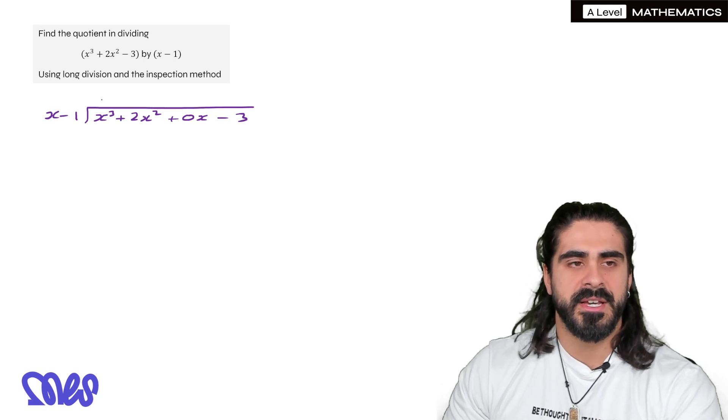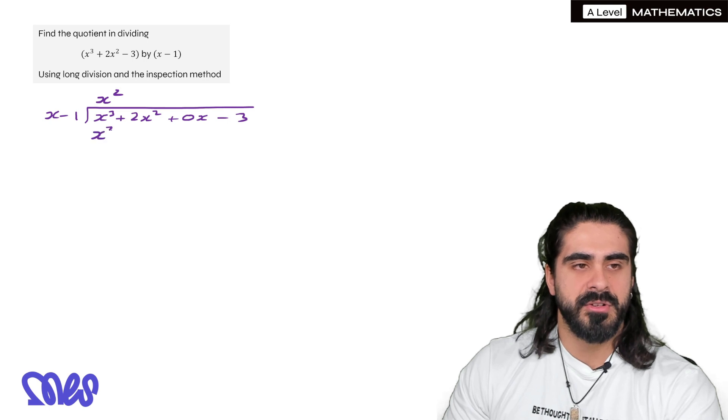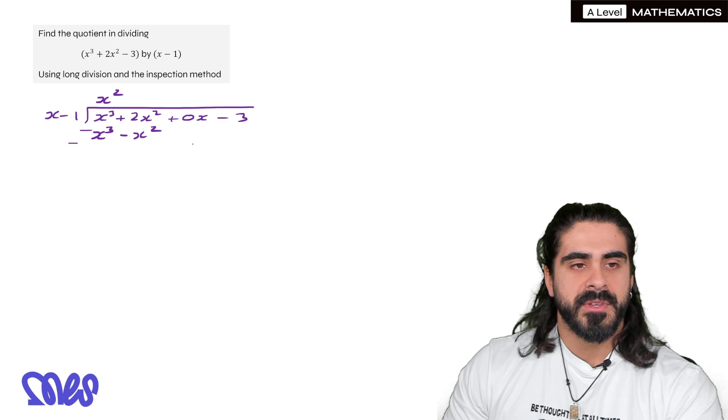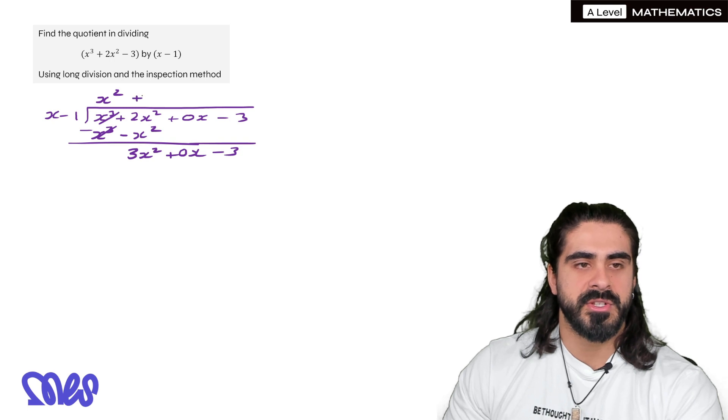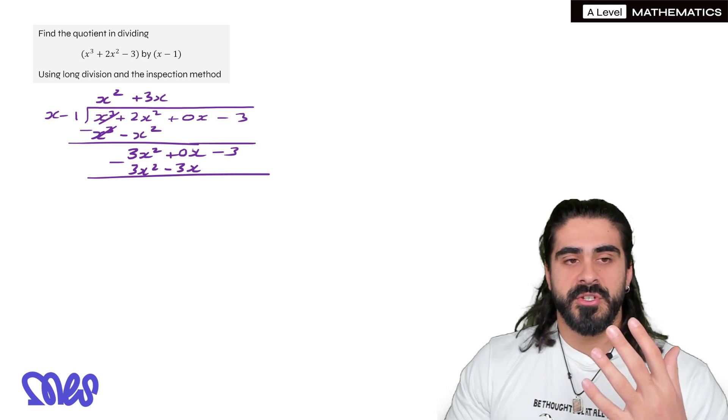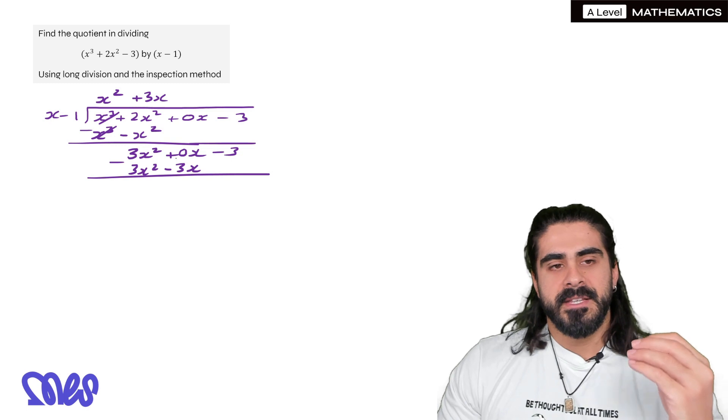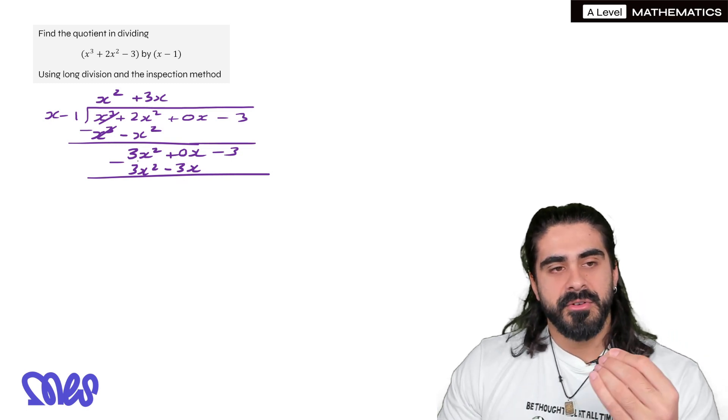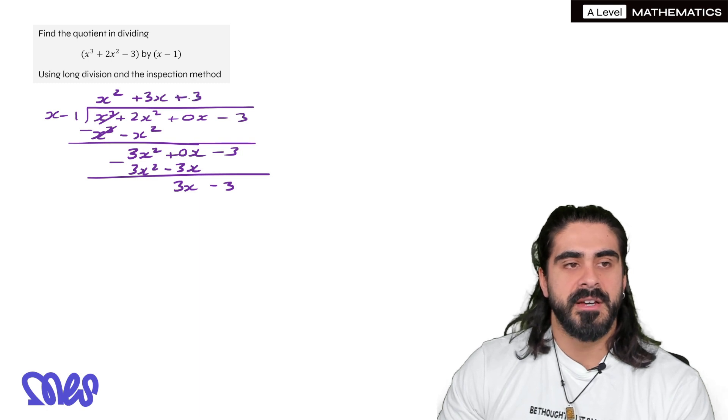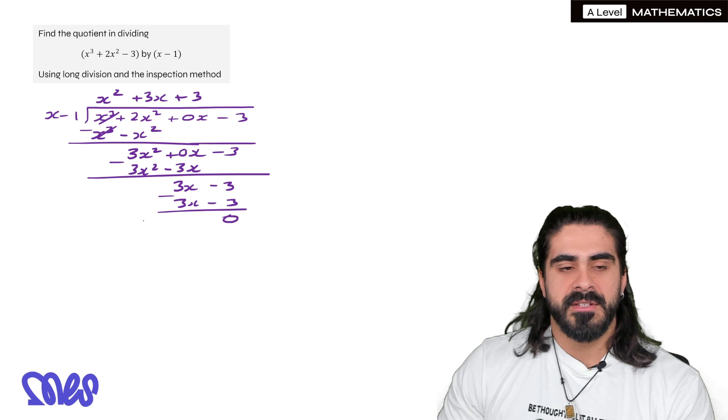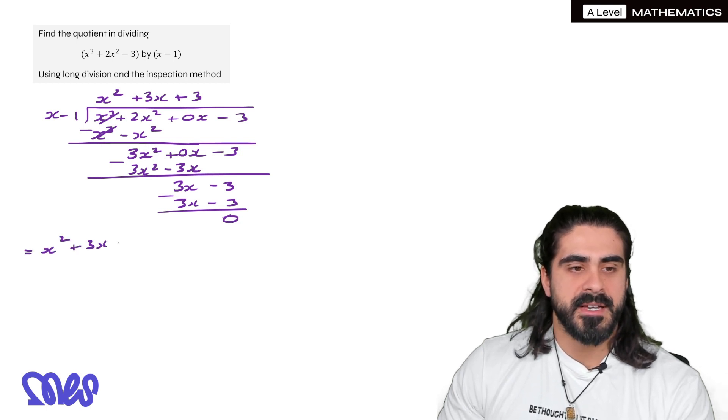So same thing how many x's going to x³ would say x². x² times x is x³. x² times minus 1 is minus x². Take away. Cancel. 2 minus minus 1 is 3x². 0x comes down and the minus 3 comes down. x times what is 3x² is just 3x. 3x times x is 3x². 3x times minus 1 is minus 3x. Take away. So this is what I'm talking about. If you don't write the 0x what I see very commonly when I mark papers is that the minus 3x gets copied down. 0 minus minus 3 which is positive 3x and then the minus 3 comes down. Now we have 3x minus 3 subtract 0. So the quotient here is x² + 3x + 3.